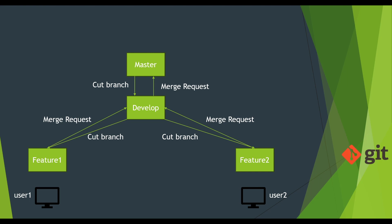Once user one is done with his changes, he wants to merge them into develop. But since develop is a protected branch, he cannot do so directly. He has to raise a pull request or merge request — these two terms are used interchangeably in the market, so don't get confused. Once he raises the merge request, a code reviewer gets assigned. The code reviewer looks into the code in the merge request and, if no issues are found, approves and merges the changes into develop.